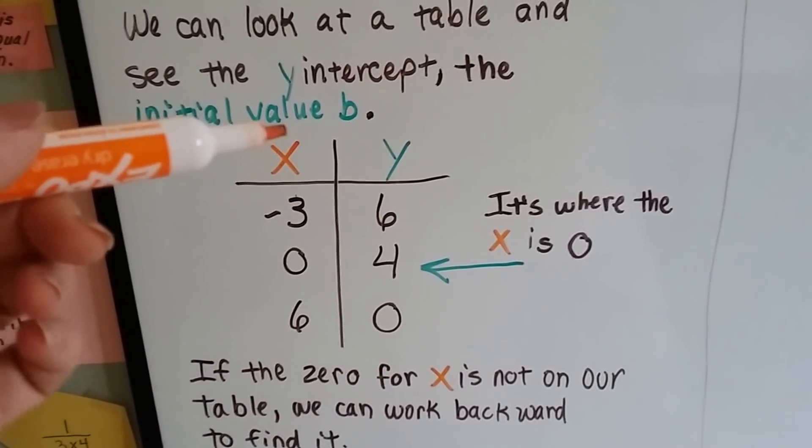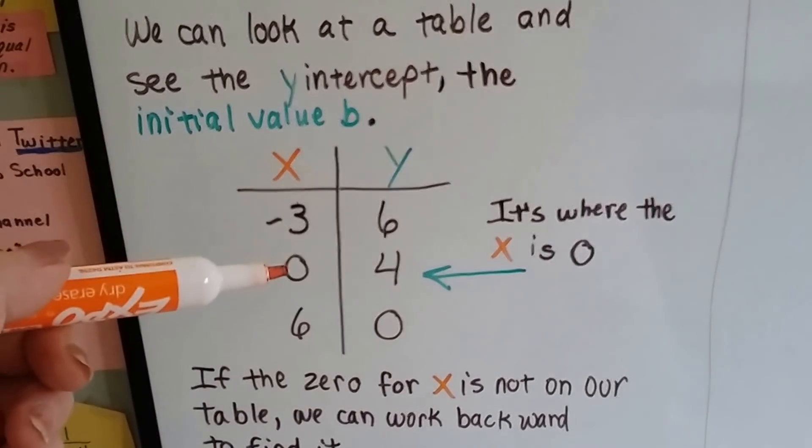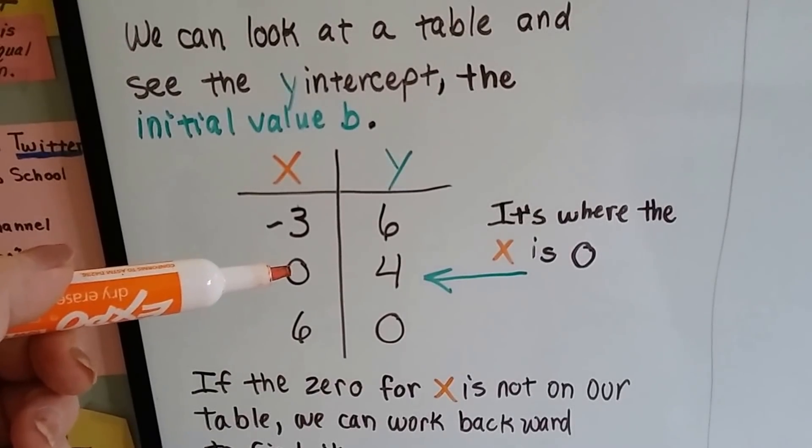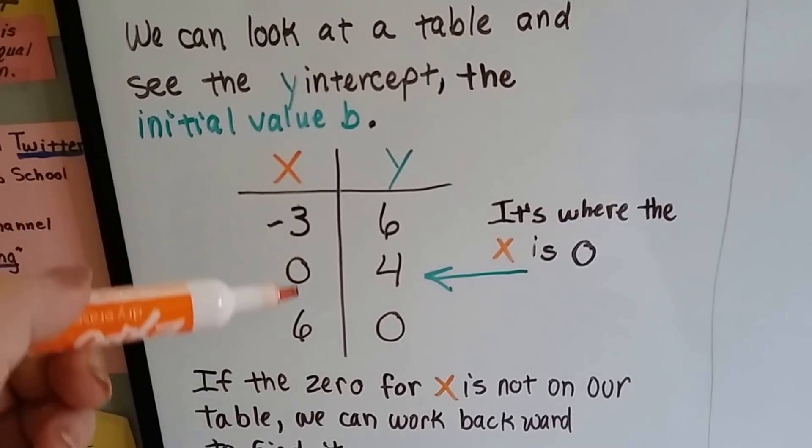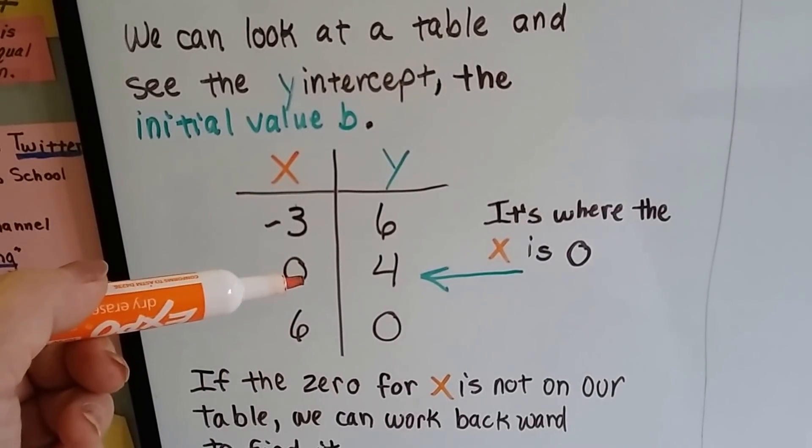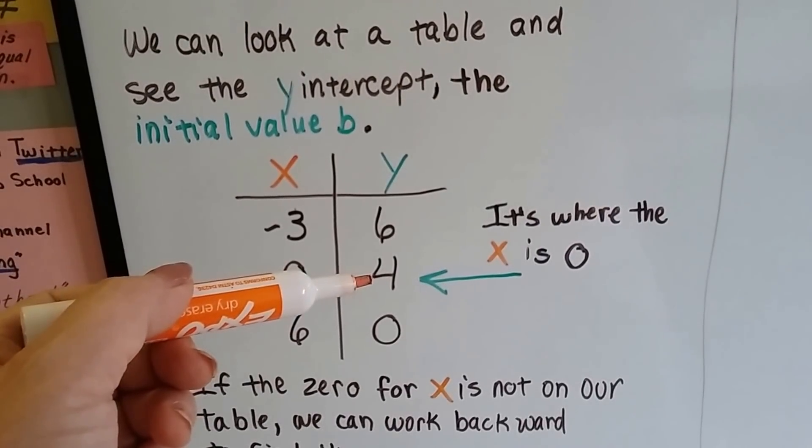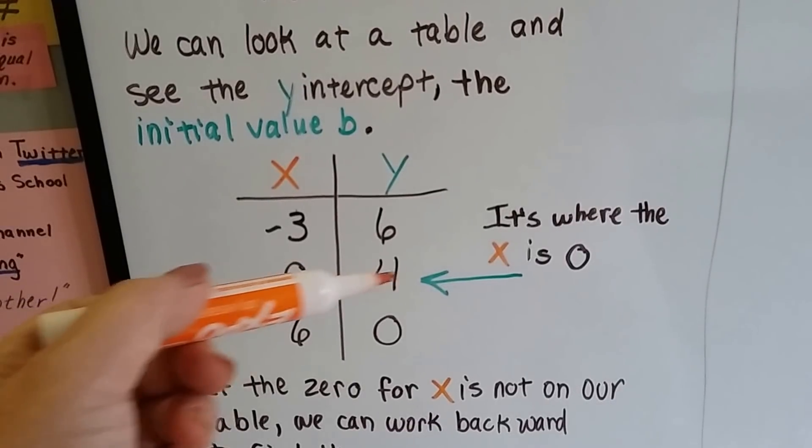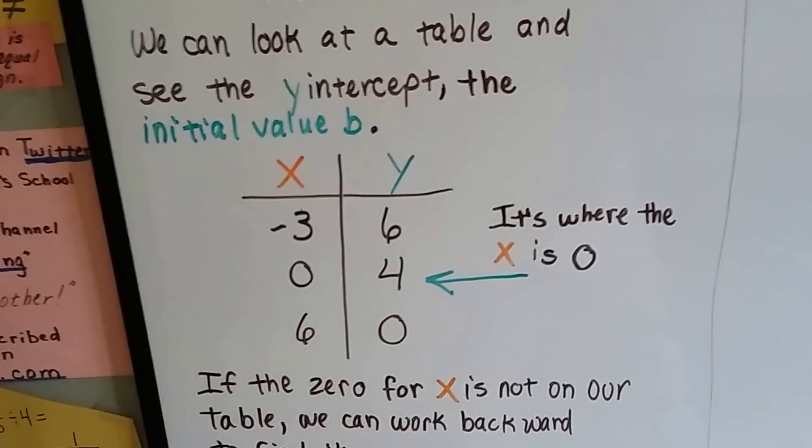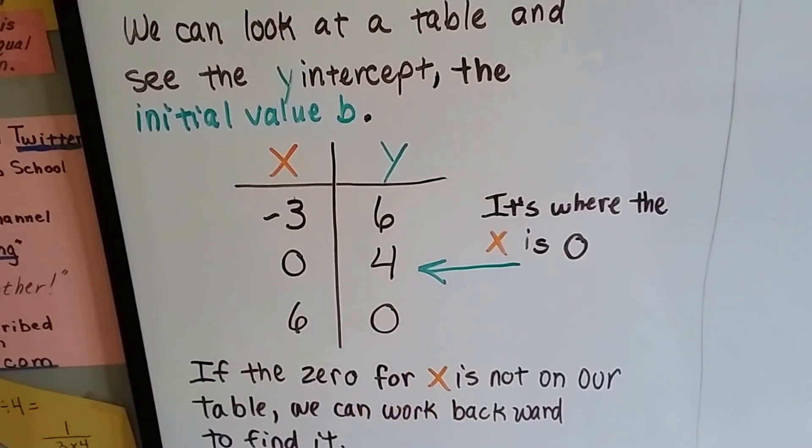When you look at a table, we learned in the last video that the x has to be a 0 for the y-intercept. So on this table, here is the 0 for x. Whatever that y is, that's the y-intercept. It's where the x equals 0. I can just look at this table and say, hmm, y-intercept is 4.